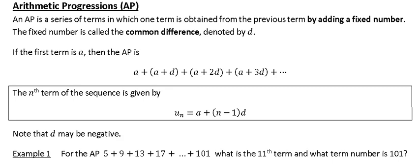An AP is a series of terms in which one term is obtained from the previous term by adding a fixed number. The first term is very important — the first term is A, and the common difference, or whatever you're adding, is D.